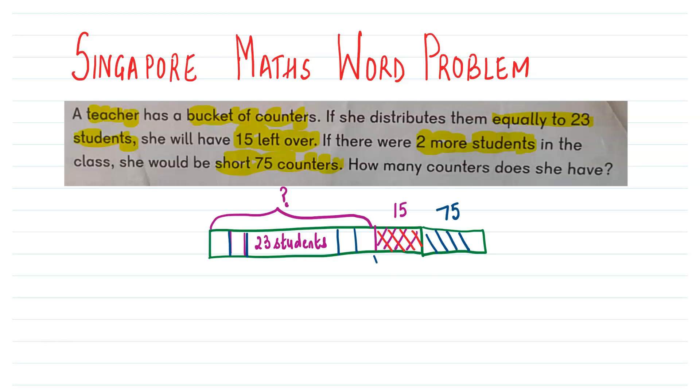So for those two students, she needs all 90. For these two more students who joined, they will get the same number of counters if she had 75 more. So we will divide 90 by 2. So 45.